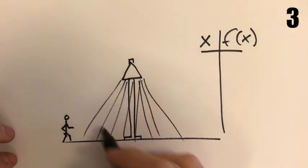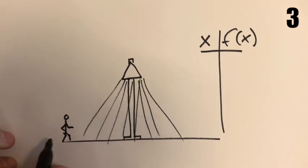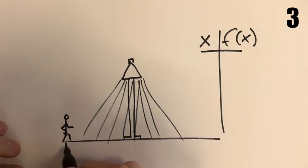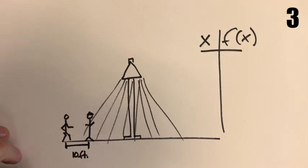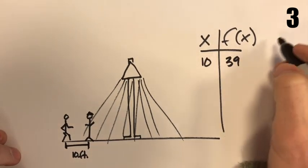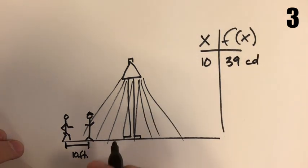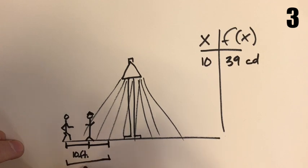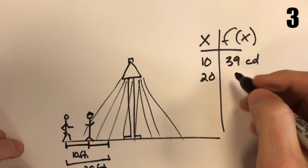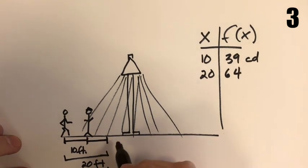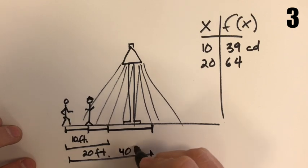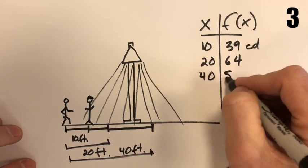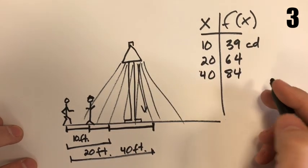In this situation we've got a streetlight and a person walking under it. We're measuring the luminous intensity on the top of that person's head. After 10 feet of walking, the luminous intensity is 39 candelas. After 20 feet total it's increased to 64 candelas. After 40 feet total — more directly under the light — it's up to 84 candelas.